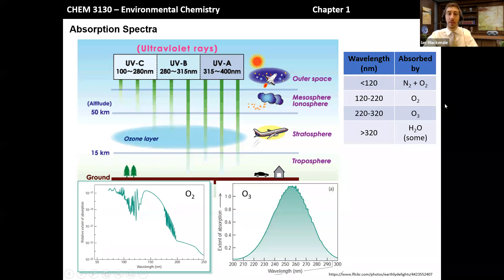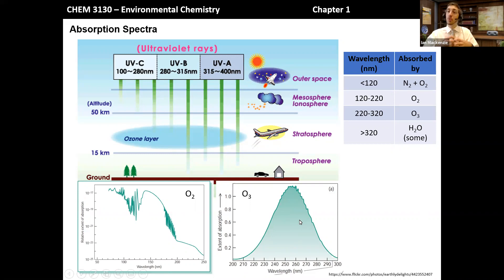Looking at ozone, on the other hand, we see that below 220 nanometers there's not a lot of absorption, but then there is significantly more absorption between 220 and up to about 300, maybe tailing up to about 320 nanometers for ozone. As light comes in, it is absorbed by the ozone molecules and the energy is dissipated, as we'll talk about in a bit.